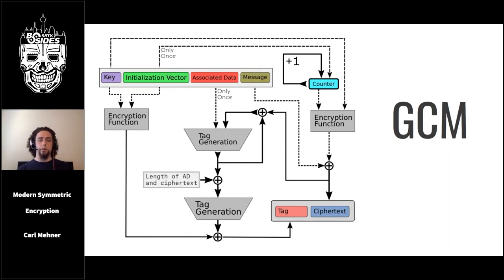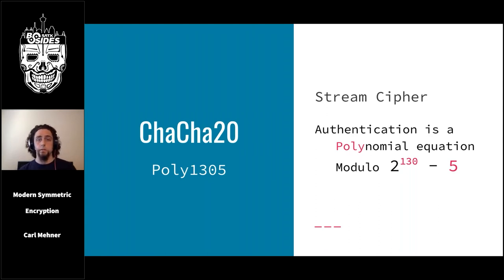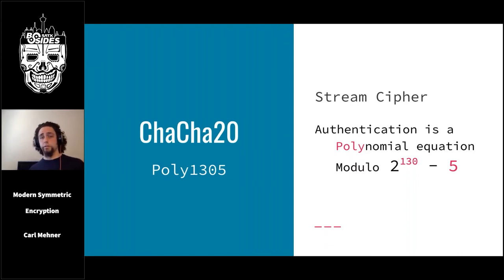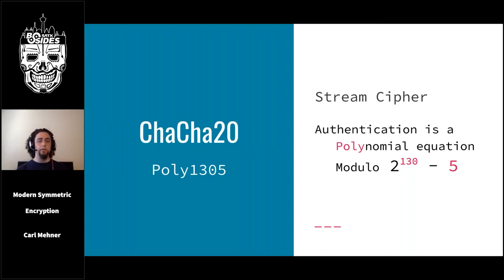One of the other modern cipher systems in heavy use today is ChaCha20 with Poly1305, a descendant of the Salsa20 cipher. ChaCha20 is a stream cipher used to create a long pseudo-random string of bits using a counter, similar to how AES-GCM works. The authentication portion — Poly1305 — refers to the polynomial equation used in creating the authentication tag, while '1305' comes from the special prime number 2^130 minus 5, used as an upper bound in the tag polynomial math.